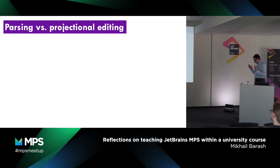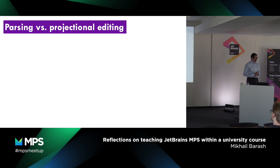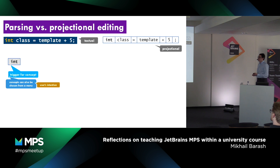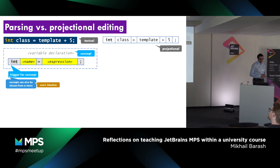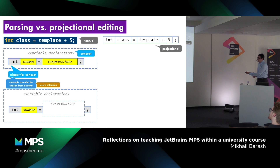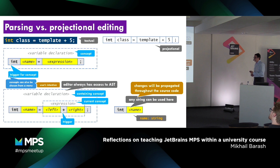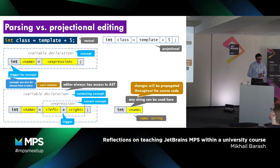I'd like to show one slide from my course about how to introduce projectional editing in MPS specifically. I gave a piece of code both as a textual representation and as a projection. Whenever we have a cell with some trigger for some concept, we immediately get cells provided by MPS with placeholders. If we want something more sophisticated than just a number, we type a trigger for another concept and get the corresponding placeholders. This slide actually helped in teaching the editor concept.